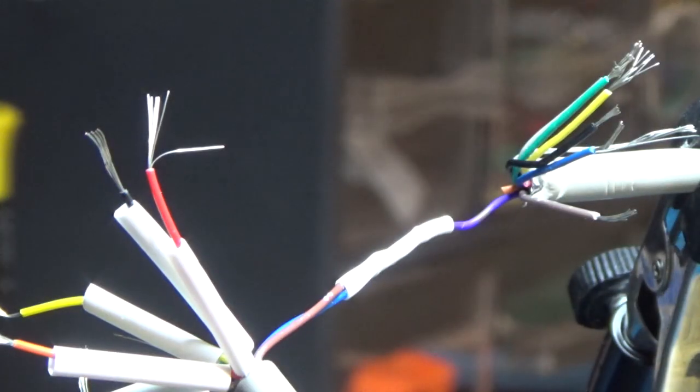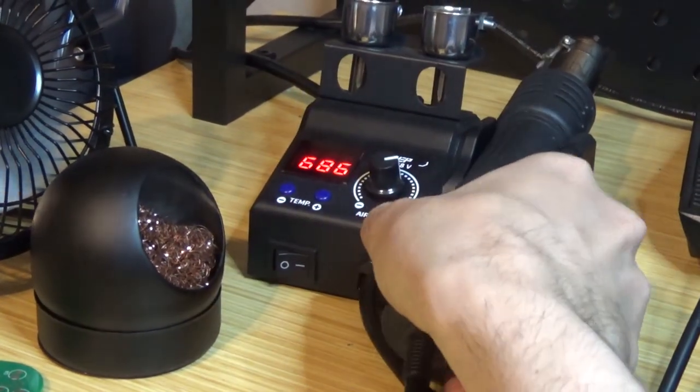I then slid my heat shrink tubing over the exposed portion of the wire and used my hot air station to shrink the tubes.